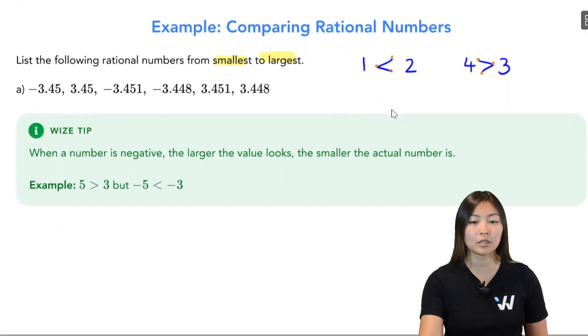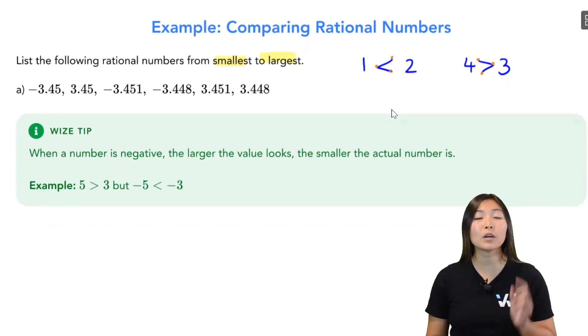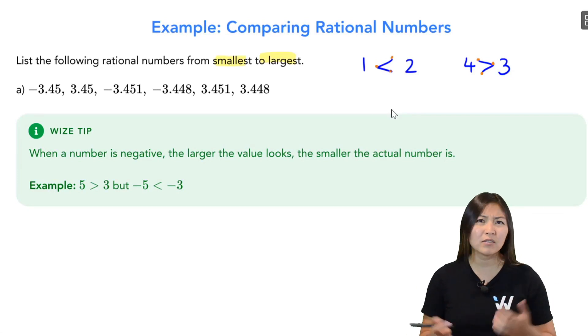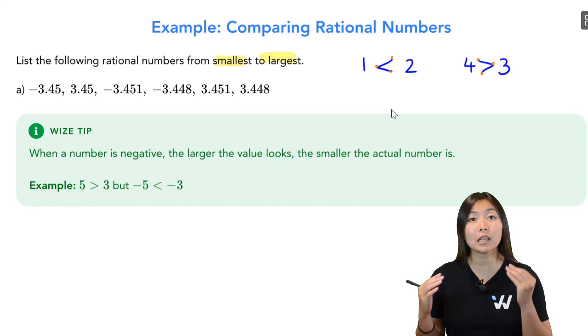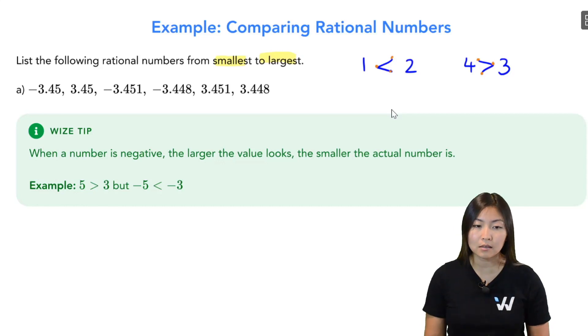So I have six numbers here. And my wise tip for you is that whenever you're looking at negative decimals or negative integers, negative numbers in general, the bigger it looks, the smaller it actually is. And a very helpful tool is the number line. So I have a number line here. Smack in the middle, we have that zero.